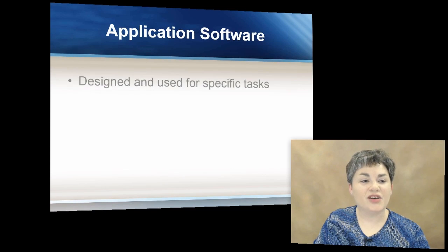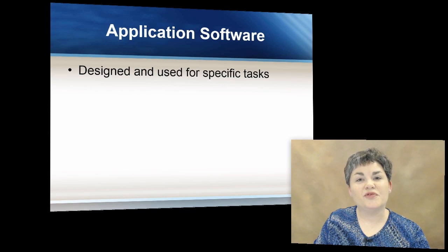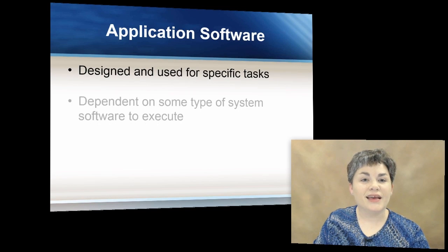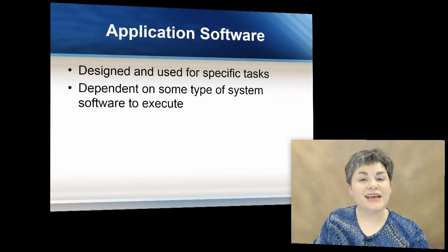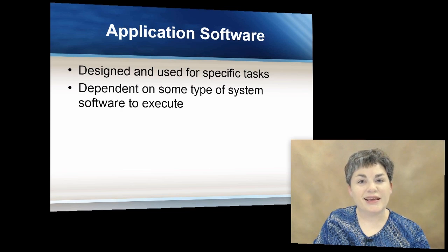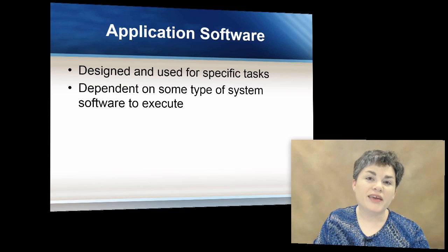Application software is designed and used for specific tasks. It's dependent on some sort of system software to execute. In other words, there has to be a system software already installed on the computer system before the application software can be installed and used.